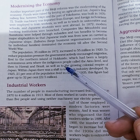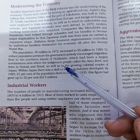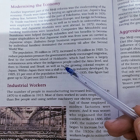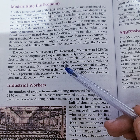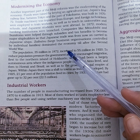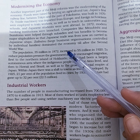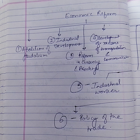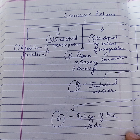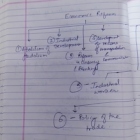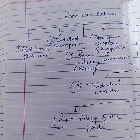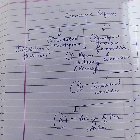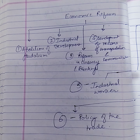The Meiji government immediately started a large number of economic reforms. The regime was one of economic liberalism, with freedoms of movement, enterprise, occupations, and industry. The government pledged that national affairs would be conducted for the benefit of the nation and its rulers. Japan was thrown open to the outside world, allowing free intercourse and contact between Japan and the rest of the world. Major economic reforms included abolition of feudalism, industrial development, reform in currency and banking, development of transportation and communication, industrial workers, and trade policy.